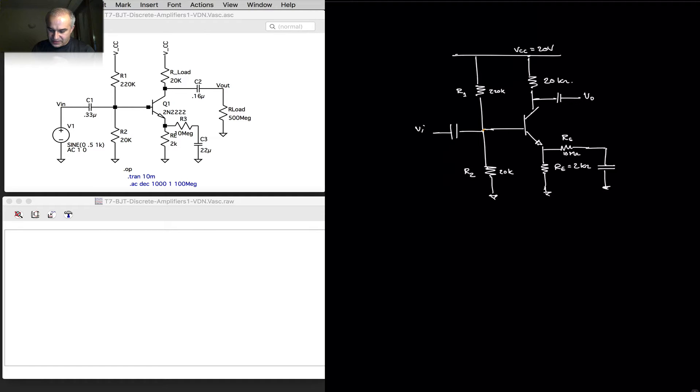So we have a common emitter amplifier here with a four resistor bias network. The voltage at the base here will be the voltage divider 20k over 20k plus 220k times 20. If we do this operation, we'll see that it's approximately 1.66. I'm talking about 20k over 20k plus 220k times 20.